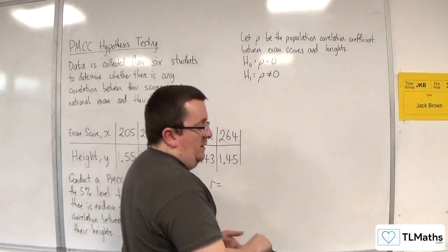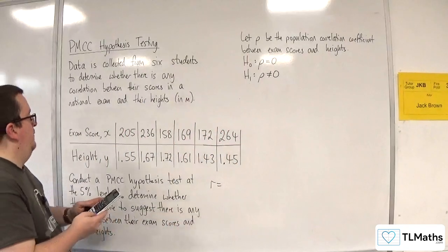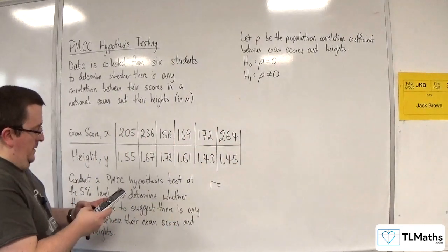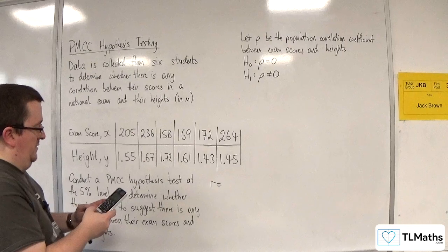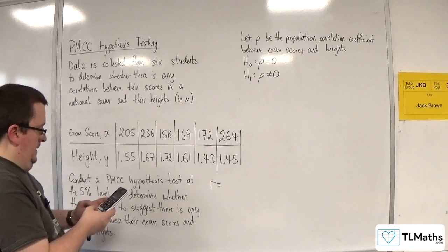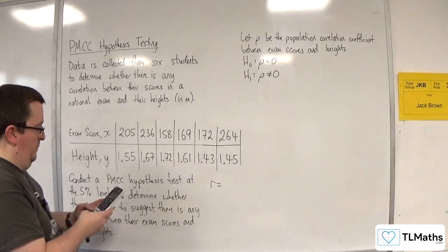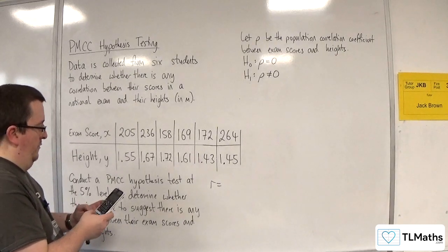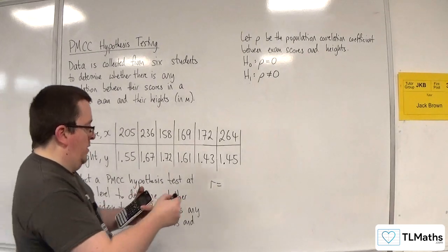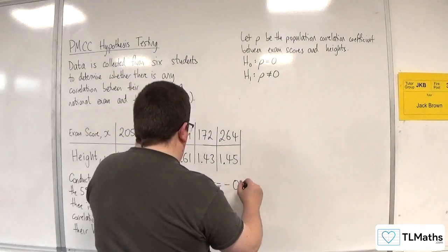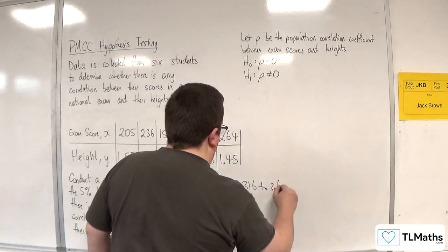We need to calculate the value of R from my sample. Let's do that first: 205, 236, 158, 169, 172, 264, 1.55, 1.67, 1.72, 1.61, 1.43, 1.45. And we're getting minus 0.316 to 3 sig fig.